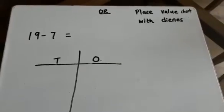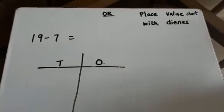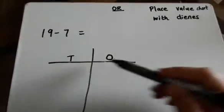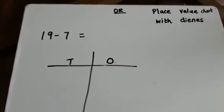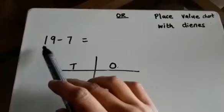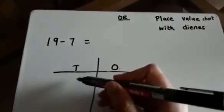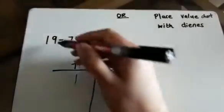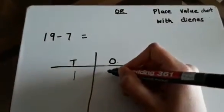There's another way you can show working out, by drawing the place value chart of tens and ones. And we're going to draw the dienes for it. So we're going to look at 19. We know that 19 has got 1 tens and 9 ones.